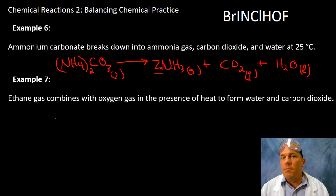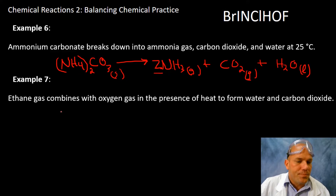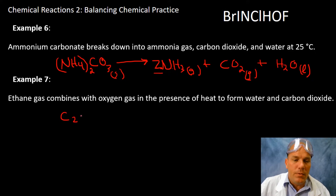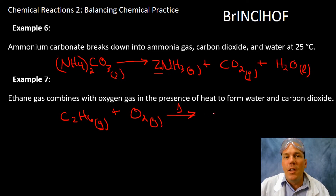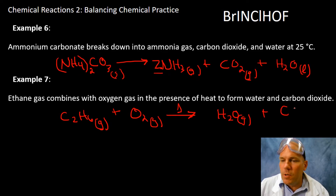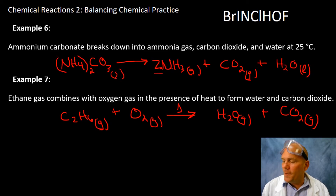Our last example: ethane — another CHO hydrocarbon. These organic compounds, when combined with oxygen with a little energy input, give off a tremendous amount of energy — highly exothermic. Ethane combines with oxygen gas in the presence of heat to yield water and carbon dioxide — you're probably starting to see a pattern with this type of combustion reaction.